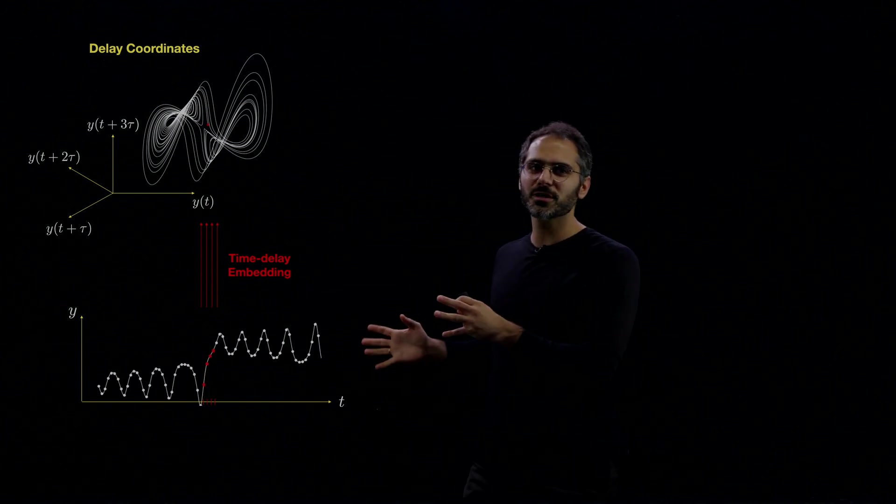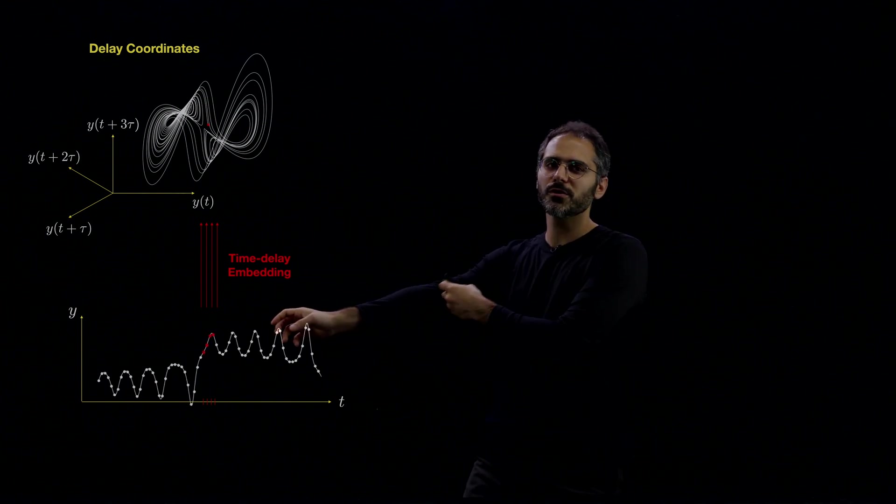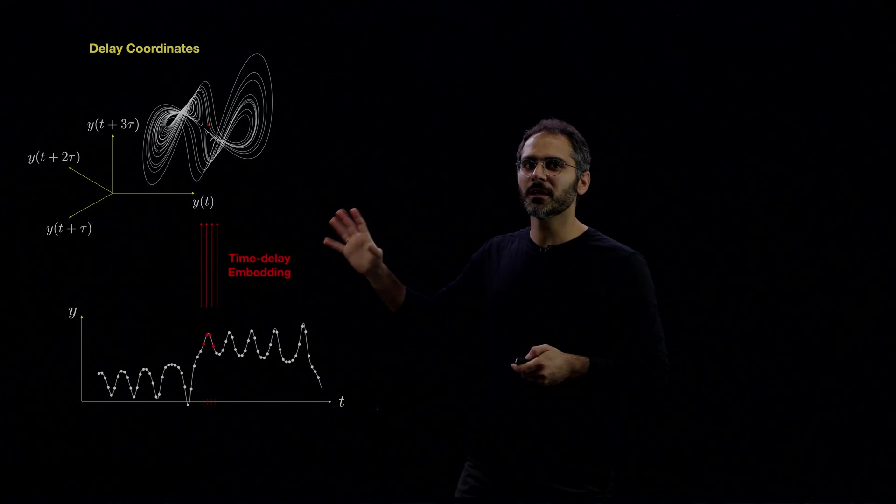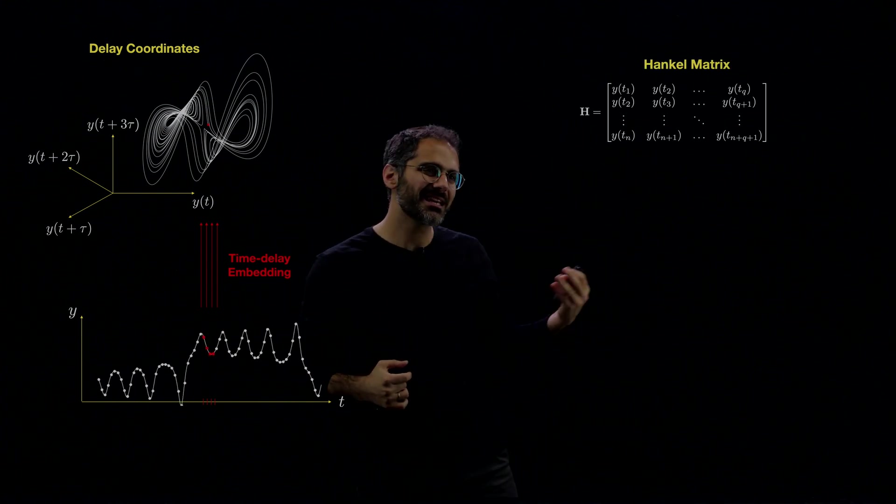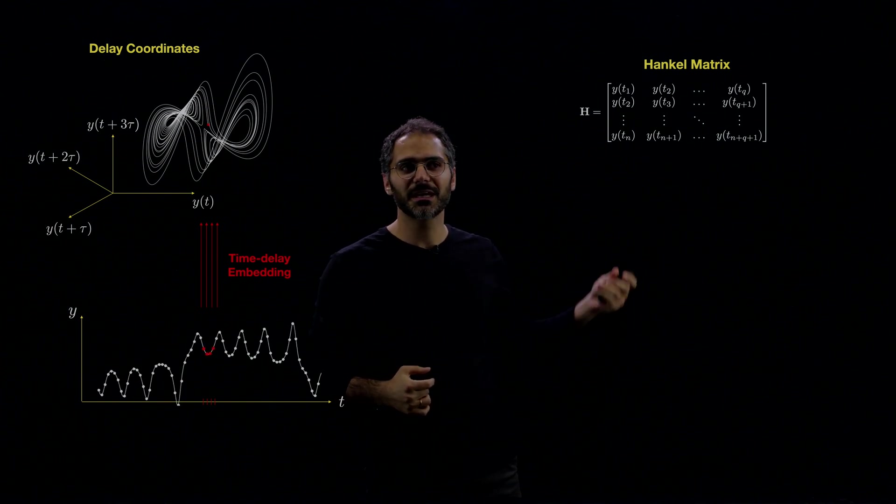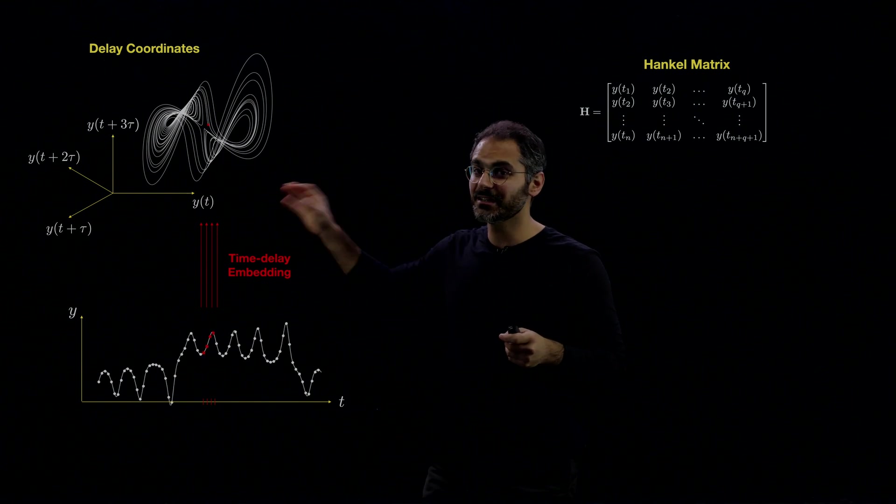So let's focus on each one of these parts in this cycle. We know that time delay embedding is possible. It's all a matter of choosing the dimensions. So we can, in this case, define the Hankel matrix. The Hankel matrix, each column is one data point in the delay coordinates.